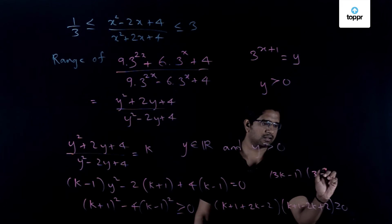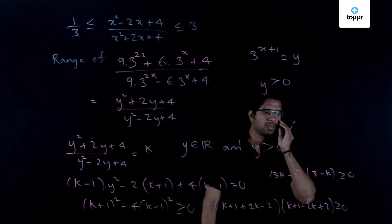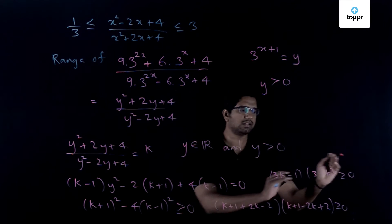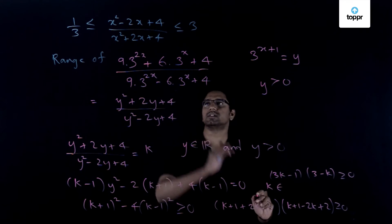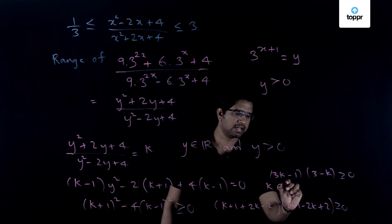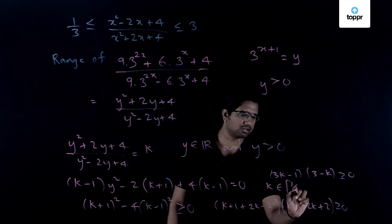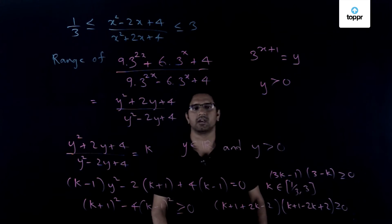In fact that, so one will get that (3k - 1) times, in this case we will get as (3 - k). This should be greater than or equal to 0 or in other words (k - 3) is less than or equal to 0 and this actually immediately gives us a condition which has been specified here that k should lie in the interval 1/3 to 3. So this is fine.